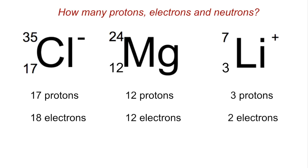And then finally for neutrons, we subtract the small number from the big, so it's 18 for the Cl minus ion, 12 for magnesium, and it's going to be 4 for the Li plus ion.